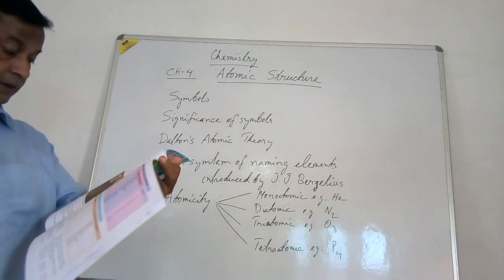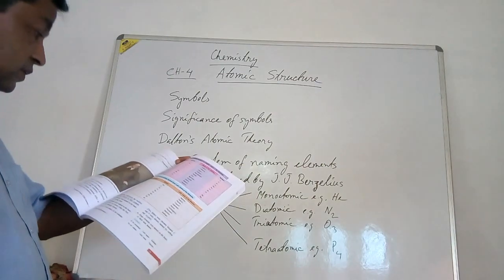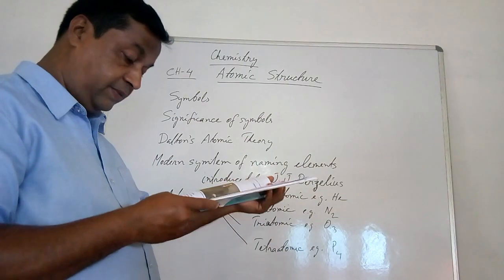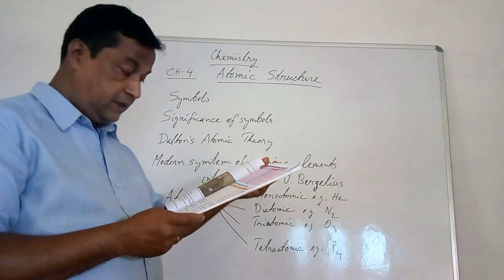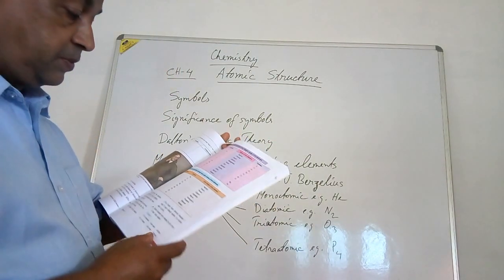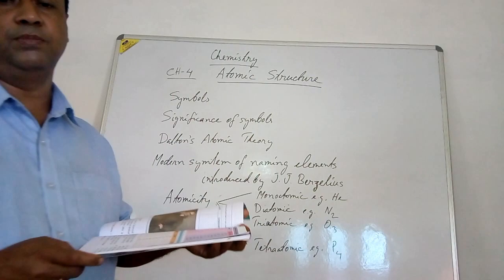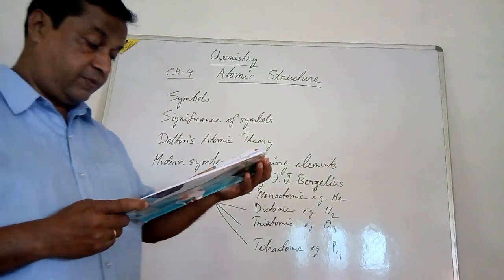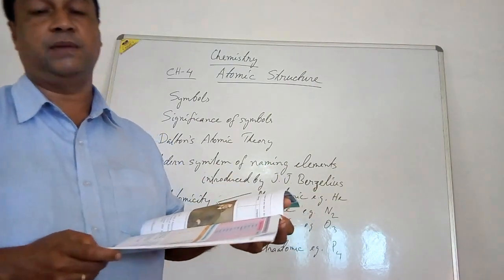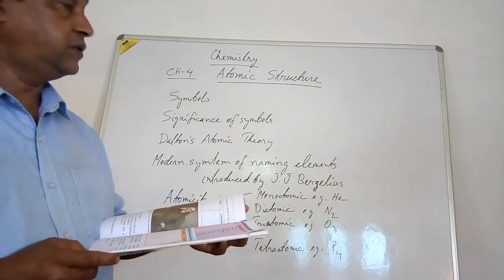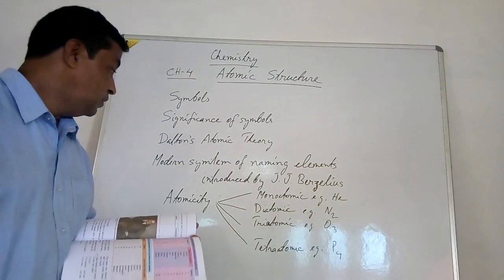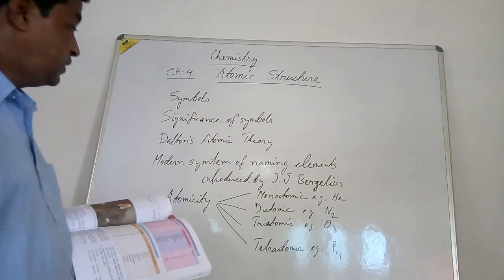The symbols of elements are given in your textbook on page number 63, starting from hydrogen up to radium. The symbols of metals derived from Latin names are also listed there on page 63. Now let's look at the modern system of naming elements, introduced by Sir JJ Virgilius.